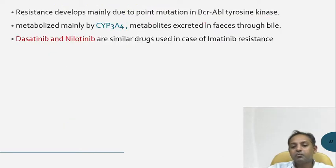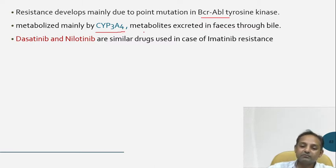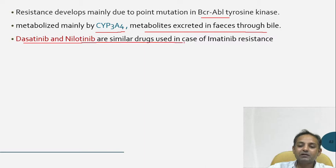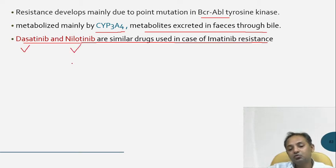Resistance is mainly developed due to point mutations in the BCR-ABL tyrosine kinase gene. Imatinib is also metabolized by CYP-3A4 enzymes and its metabolites are excreted in the feces through bile. Dasatinib and nilotinib are similar drugs used in cases of imatinib resistance.